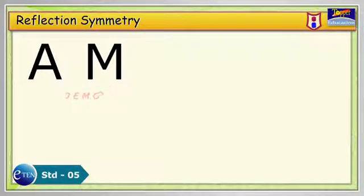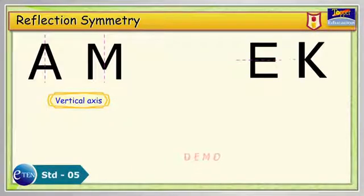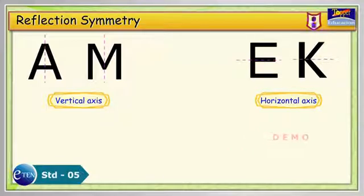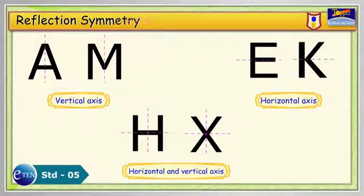The letters A and M each have a vertical axis of symmetry. The letters E and K both have horizontal axis of symmetry. And the letters H and X have both horizontal and vertical axis of symmetry.